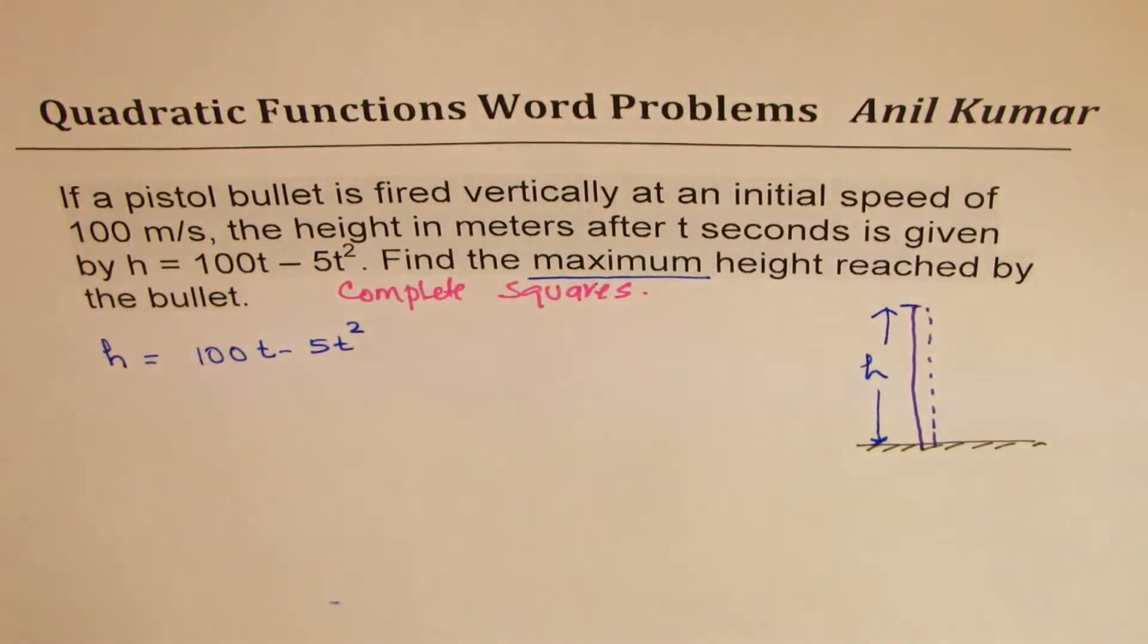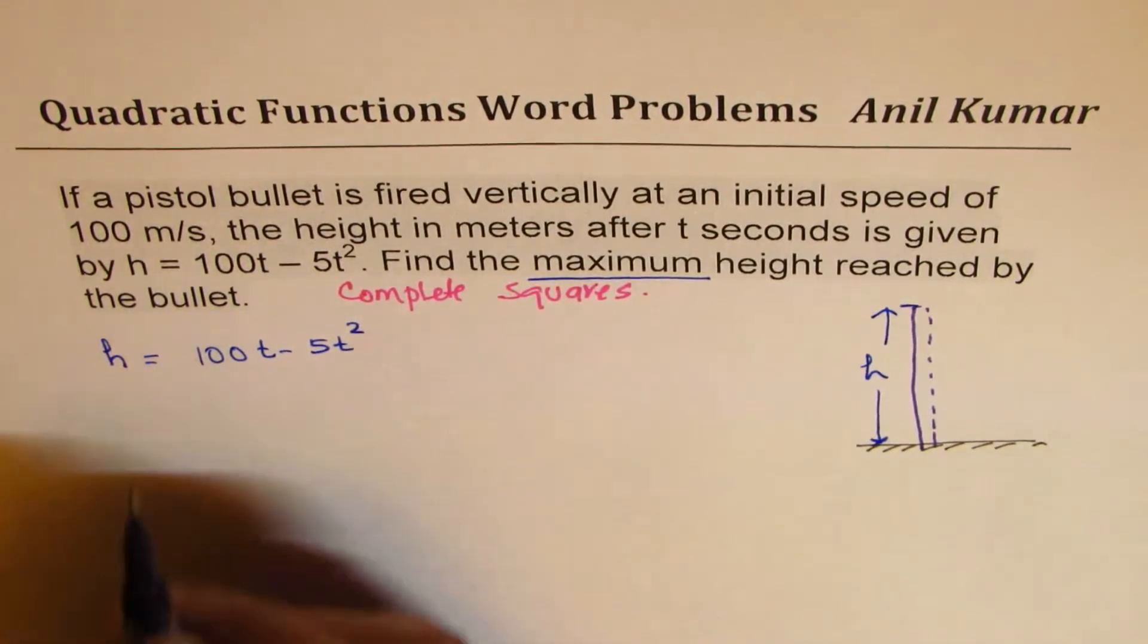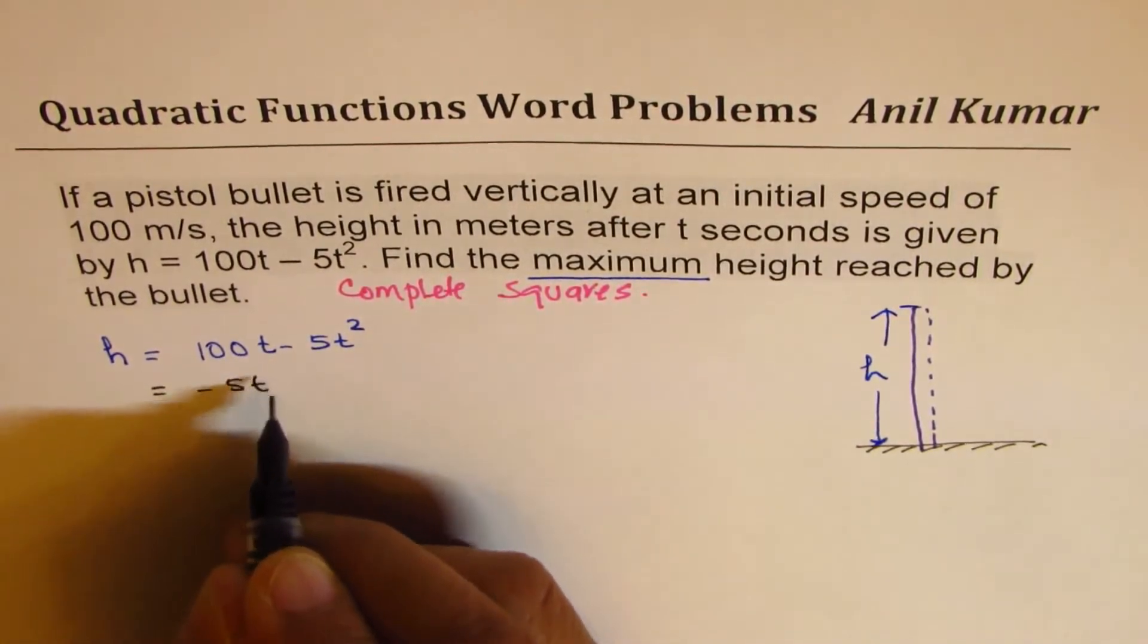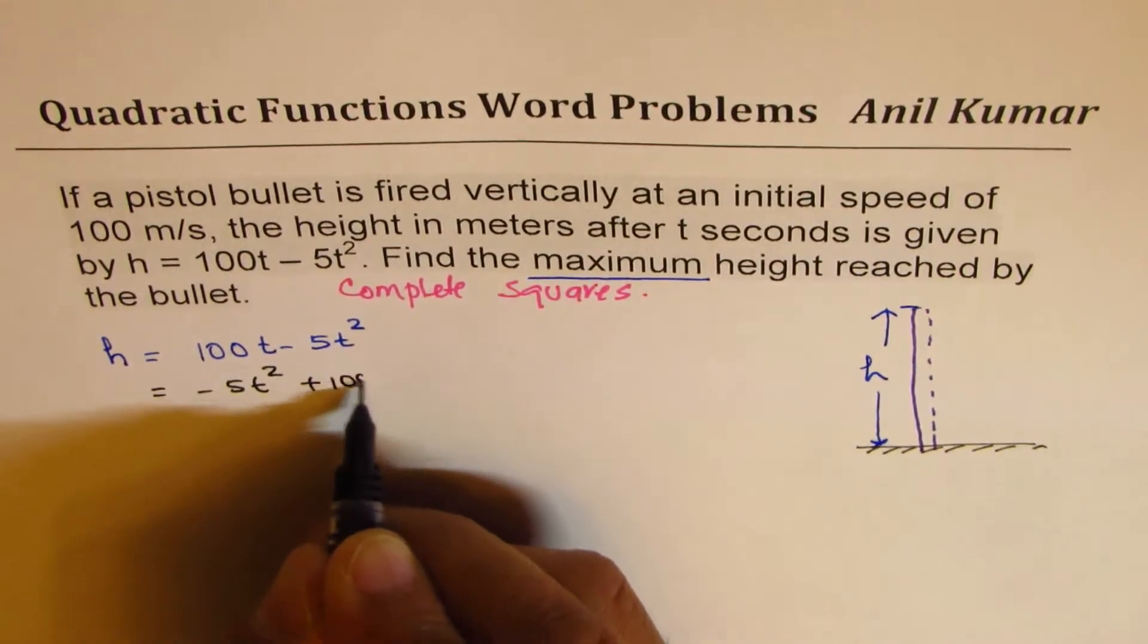That's so simple, right? Straightforward. So we'll do completing the squares, we do minus 5t squared plus 100t.